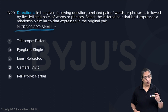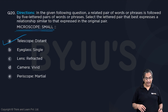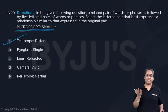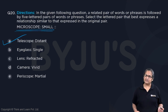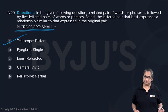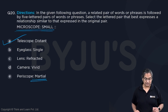As telescope is used to view distant objects — perfect. Eyeglass: eyeglass need not be single, but eyeglass can be used for anything. Lens refracted: light gets refracted in lenses, not always. Camera vivid: you take vivid pictures, but you can also take blurred pictures, so not to see vivid things. Periscope is not necessarily martial.